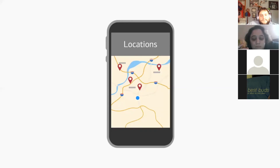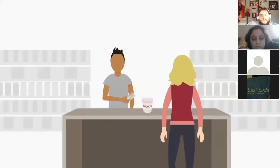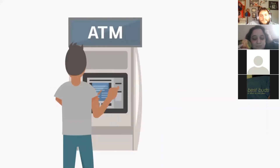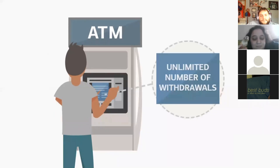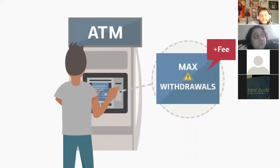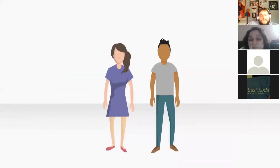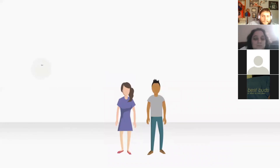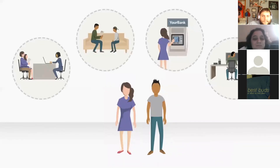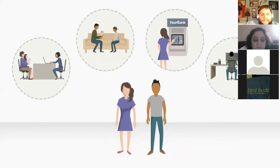Your teen might also avoid ATM fees by getting cash back when buying something at some stores. Most banks allow unlimited withdrawals per month, but some accounts charge a fee after a certain number. Getting a first checking account is a big step toward financial independence. Helping teens understand how their accounts work and encouraging regular monitoring can help them manage money responsibly and build good money habits for the future.